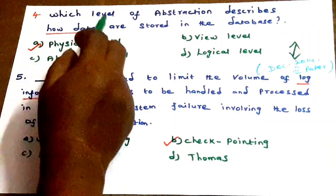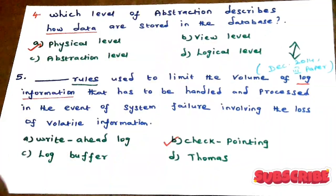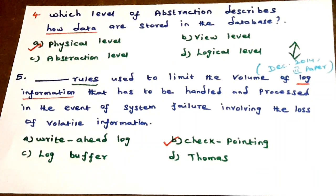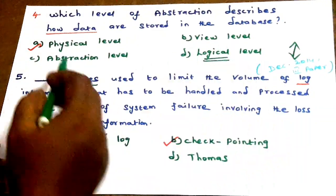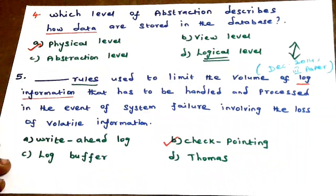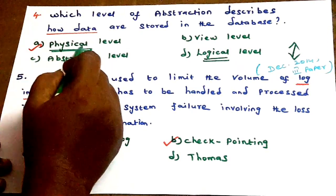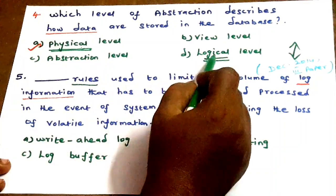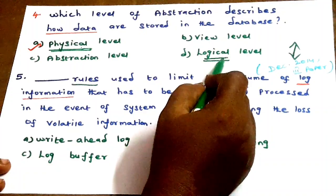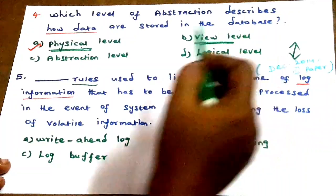Next: which level of abstraction describes how data are stored in the database? 'What data is stored?' — the answer is logical level. 'How data is stored?' — the answer is physical level. Physical level is also called internal level. Logical level is also called conceptual level. View level is also called external level.